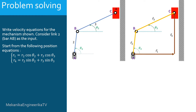In this problem, link 2 is the input. In direct analysis, the kinematic parameters of the input are given. Thus here, the angular velocity of link 2 will be assumed known.